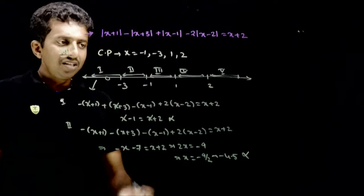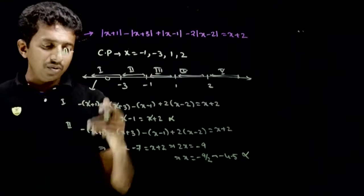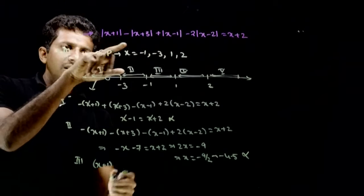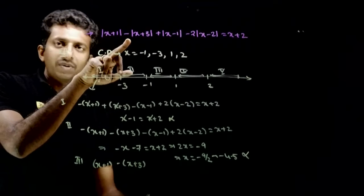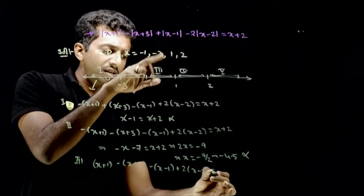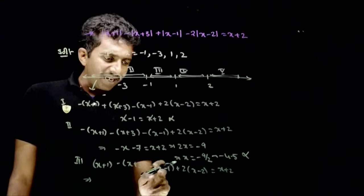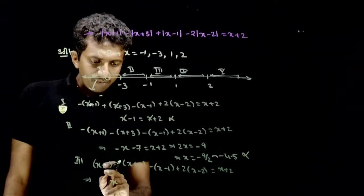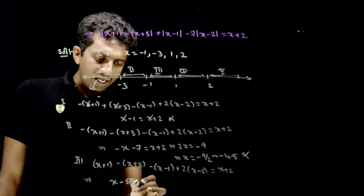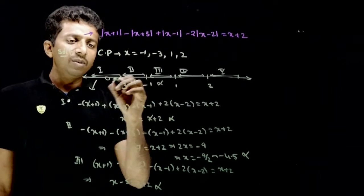In the third interval (-1 to 1), x+3 and x+1 are positive, but x-1 and x-2 are negative. Setting up and solving the equation in this interval, we again get no valid solution. So the third interval also has no solution.